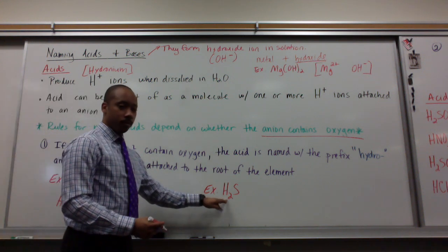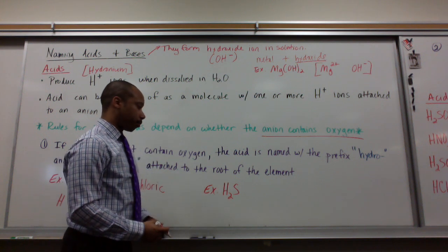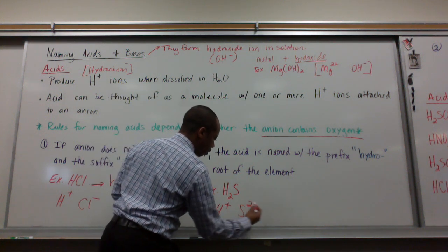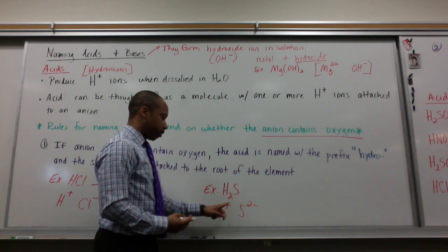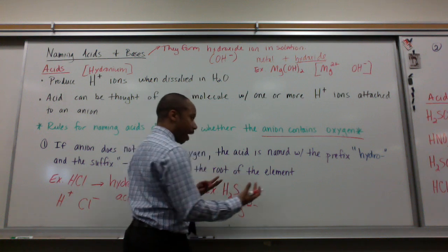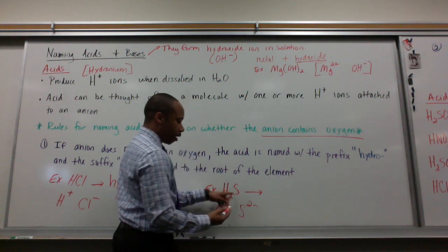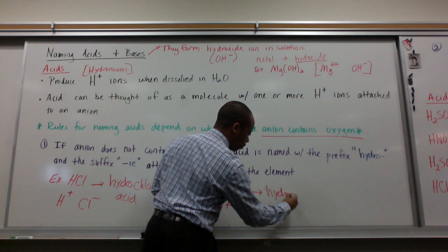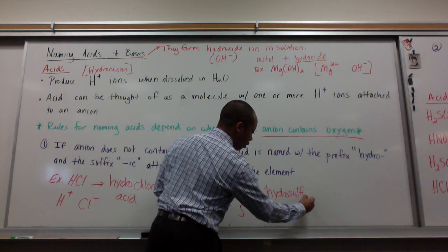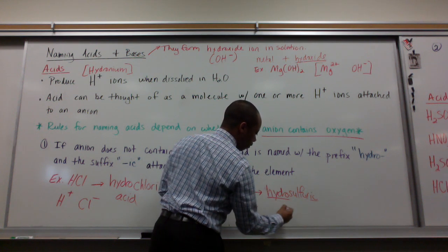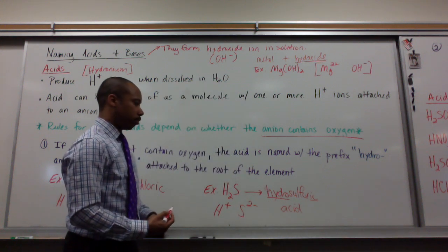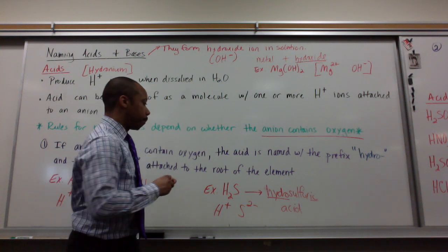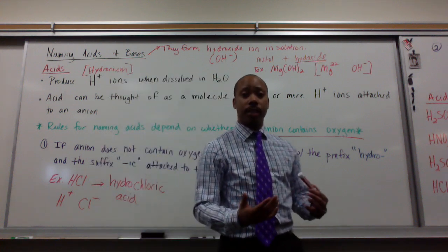Next example: H₂S. When we dissolve this in water, we have hydrogen ions and sulfide ions. There are no oxygens in the anion, so we call it hydrosulfuric acid.